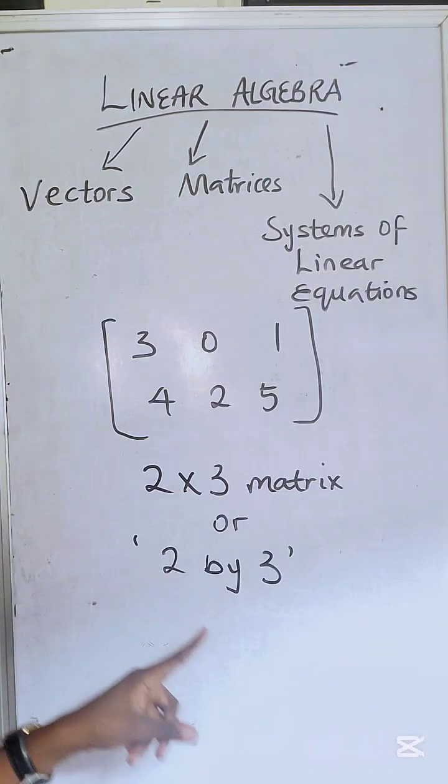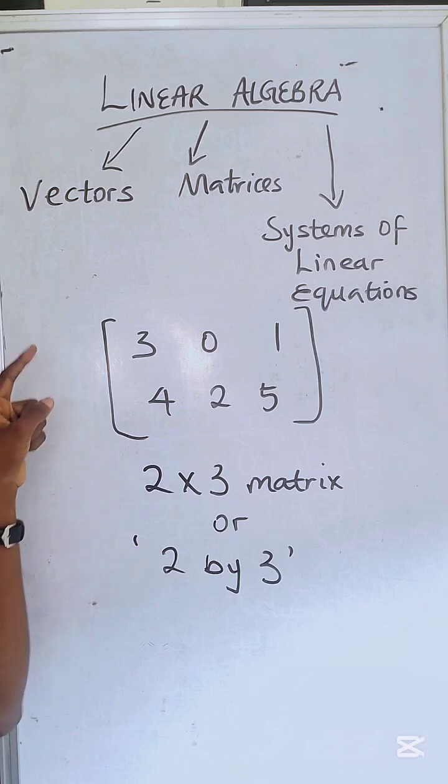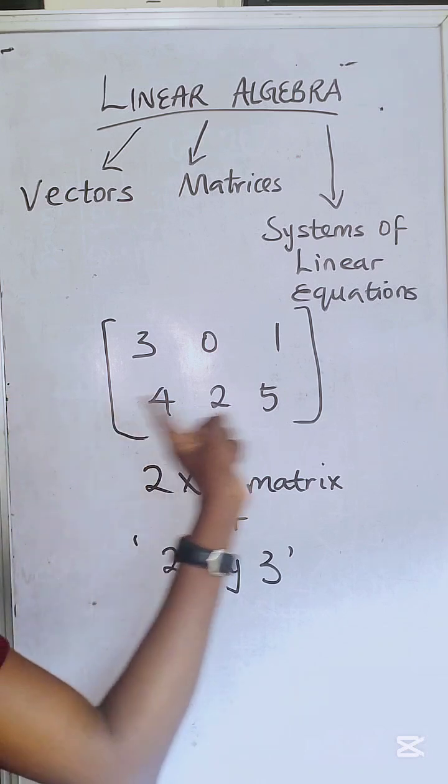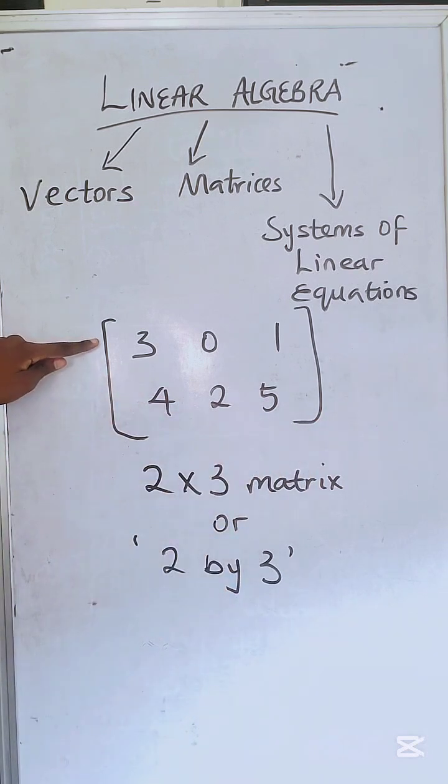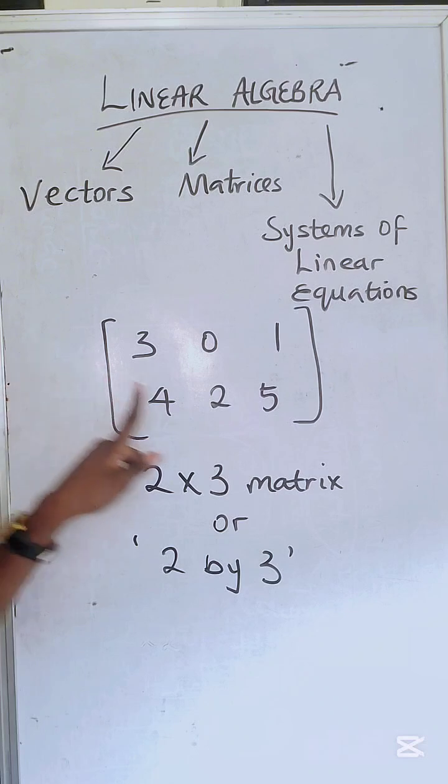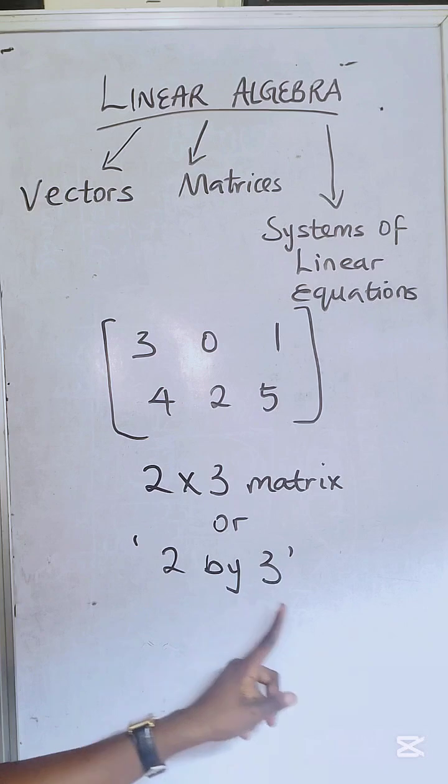It's mostly called two by three. Why? You have to call the number of rows before the number of columns. So of course, you see that we have two rows and we have three columns. Please take note. So it's two by three.